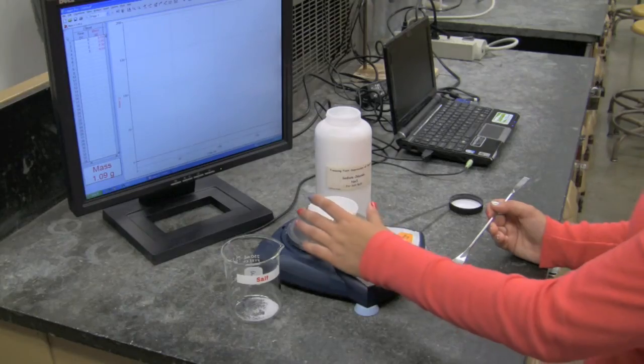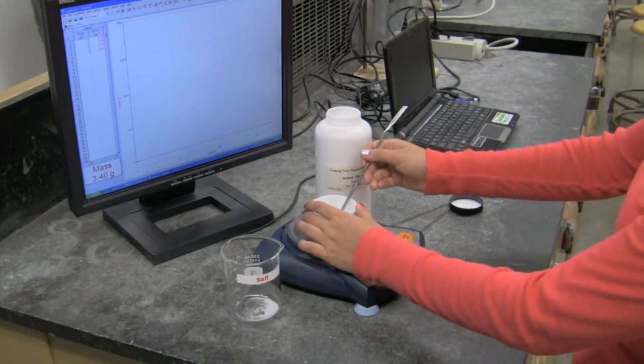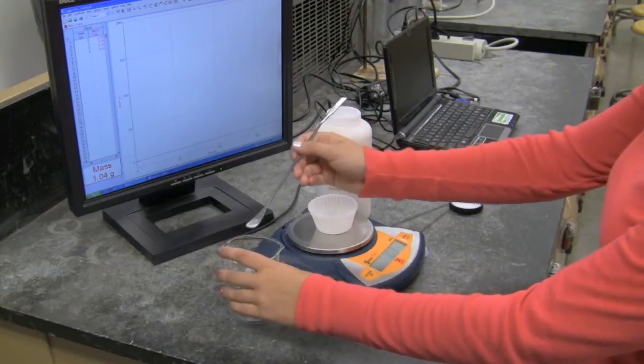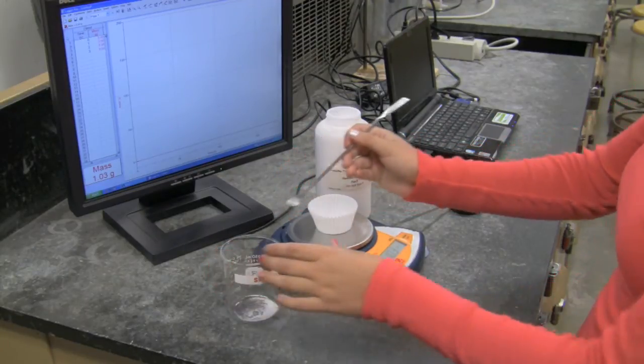The student is now scooping excess salt from the weighing boat, 2.51, and placing it in the beaker to her left.